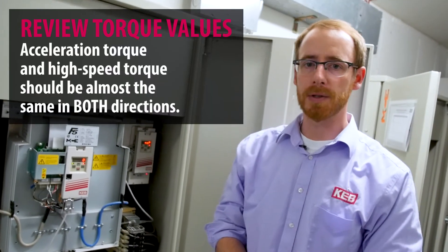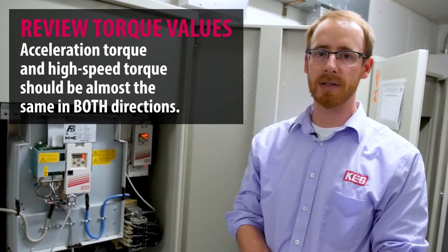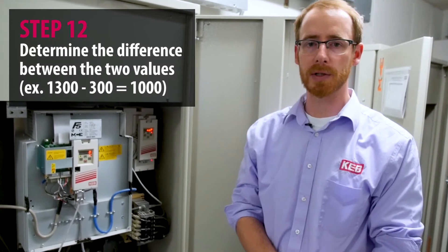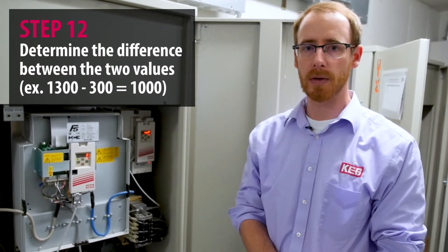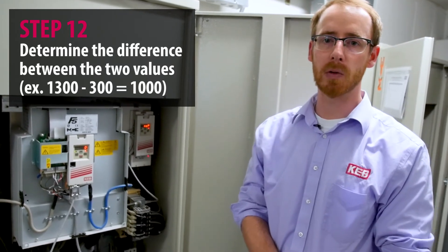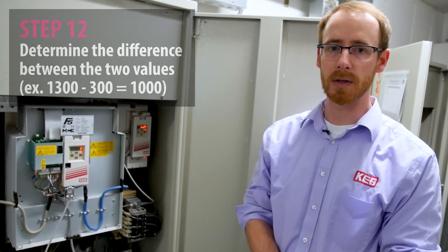With a balanced car, what we should see is that the acceleration and high speed torque are going to be approximately the same in the up and down directions. But the inertial learn value, what we want to enter is the difference between the acceleration torque and the high speed torque. So in this case the acceleration torque was about 1300 newton meters and the high speed torque was about 300 newton meters. So what we want to do is enter in the difference of 1000 newton meters.